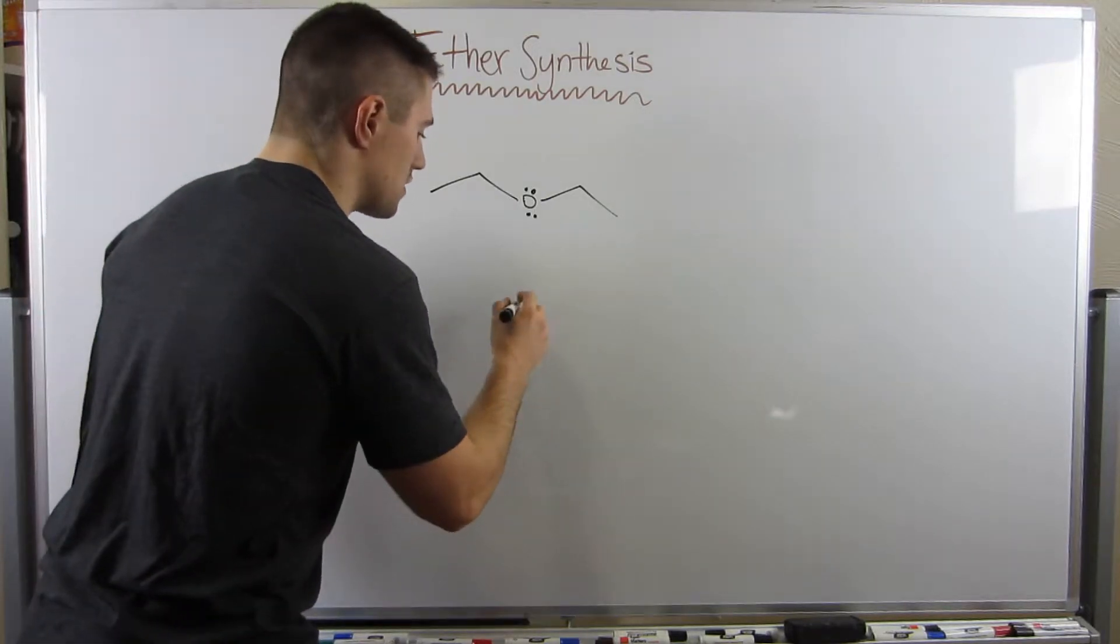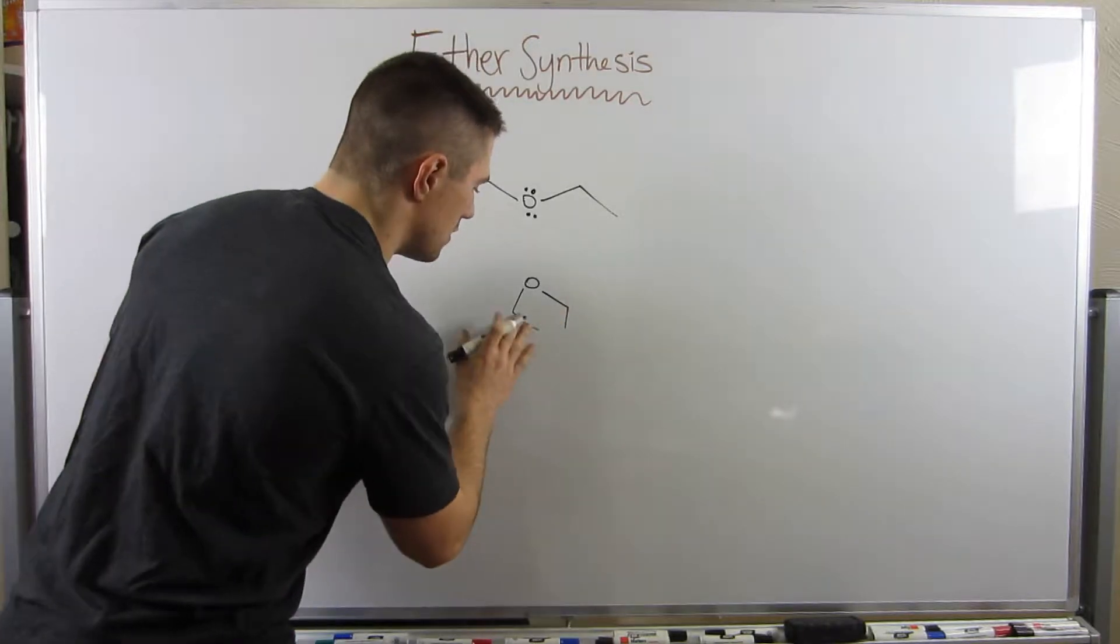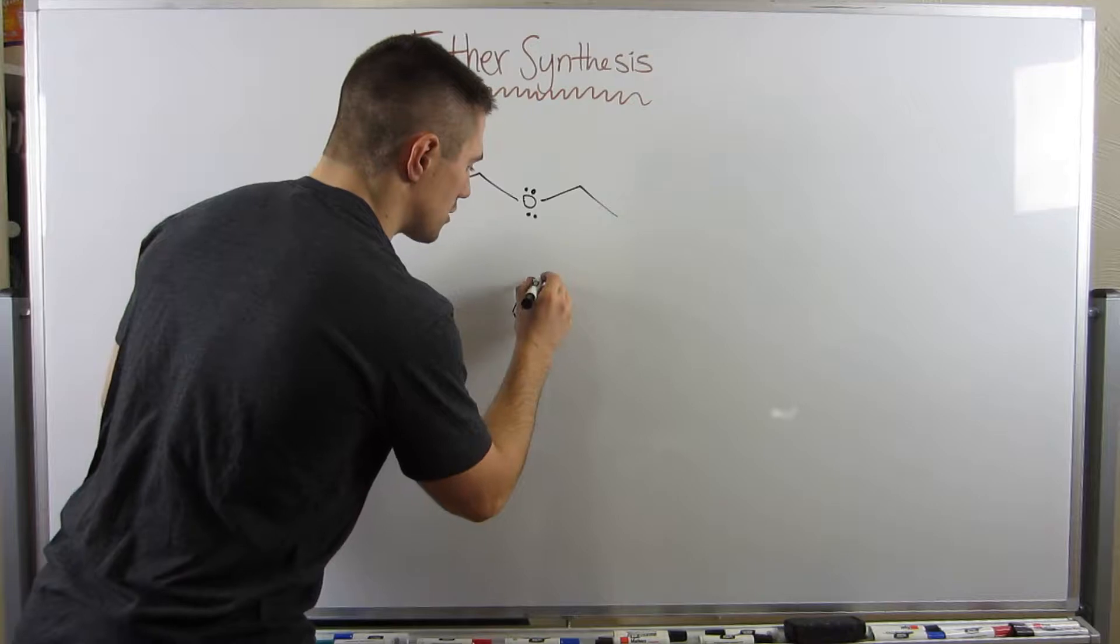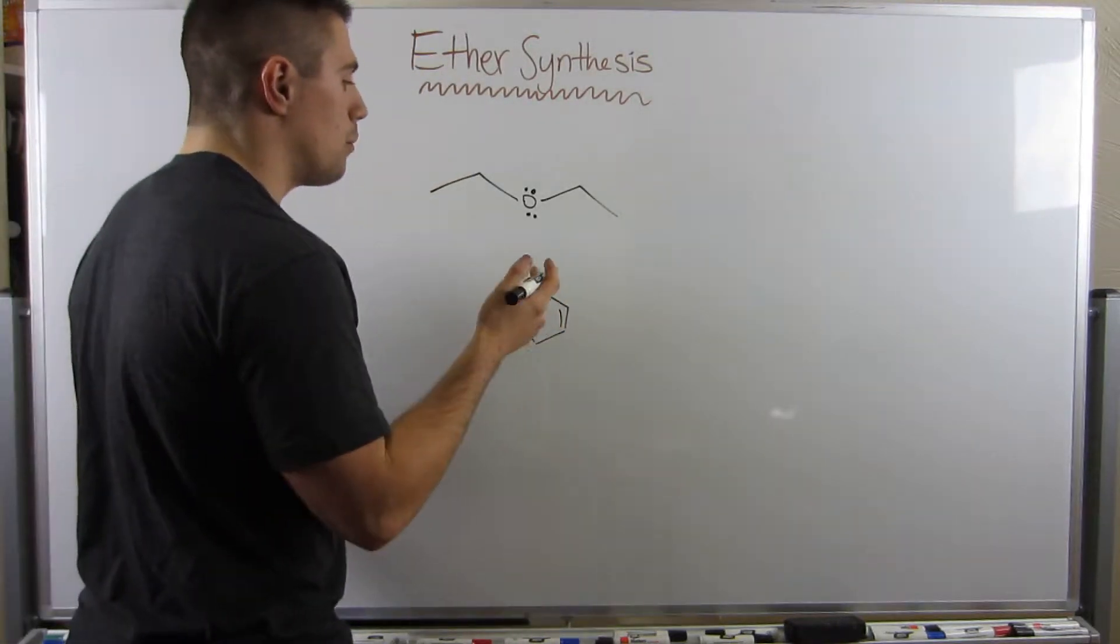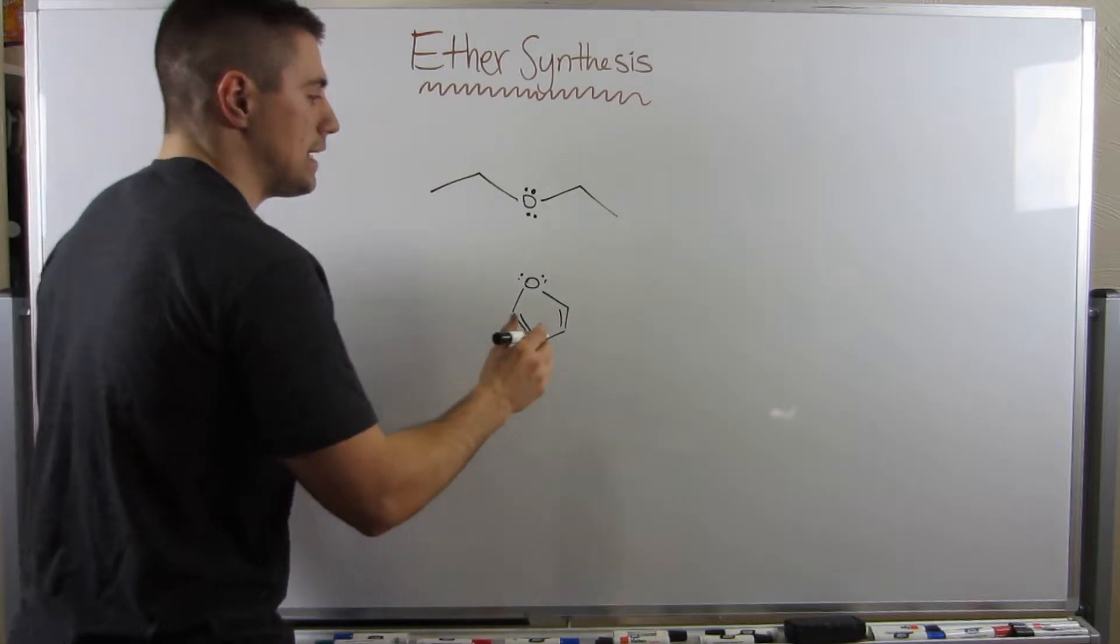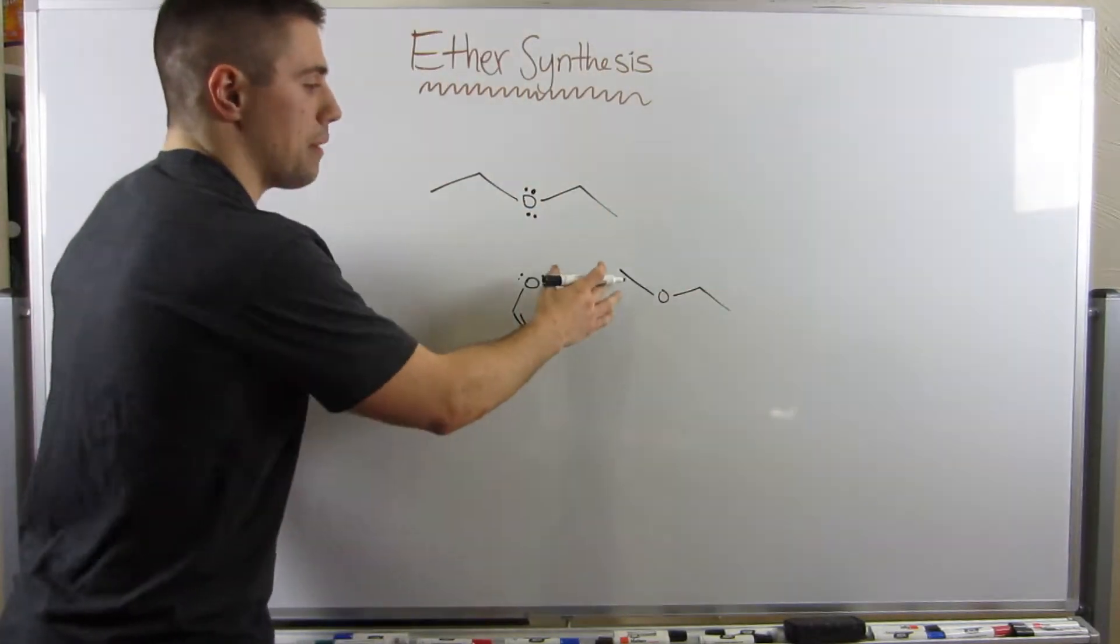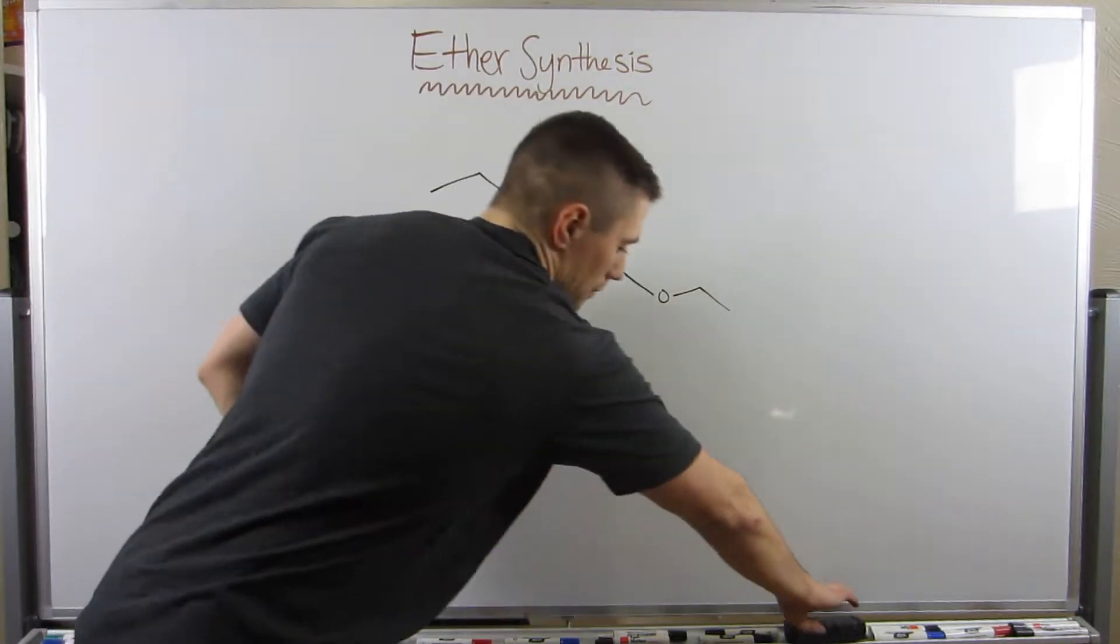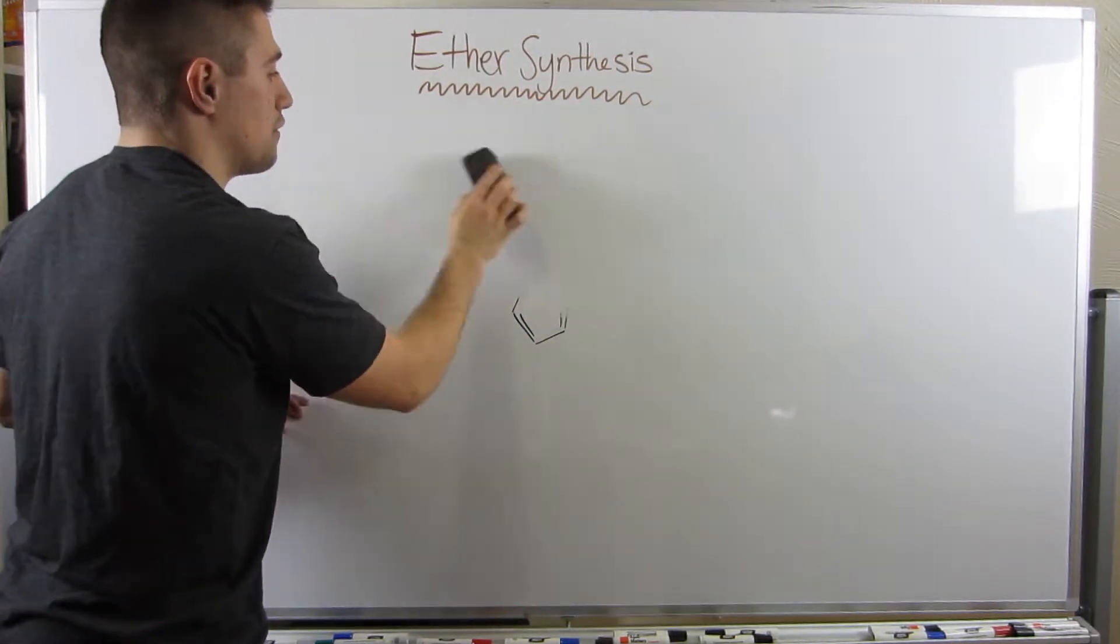To recall, just to draw you guys an example of an ether, remember ethers are that type of functional group where you have an oxygen in the middle of a carbon chain and it has carbons on both sides. So this is an ether, this is diethyl ether, a good nonpolar solvent as we remember from the substitution elimination station series.